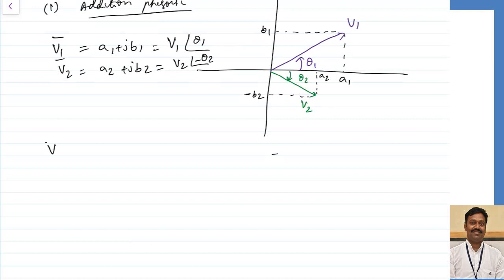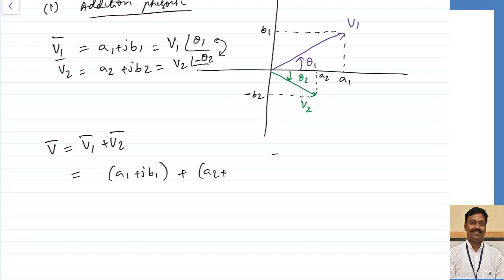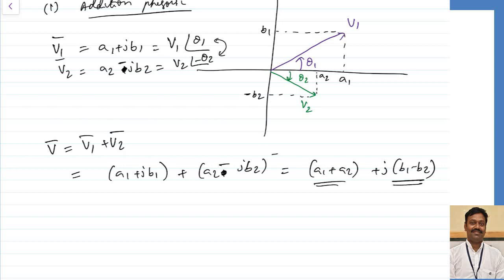The sum V1 plus V2 in rectangular coordinate system: (A1 plus jB1) plus (A2 minus jB2) equals (A1 plus A2) plus j(B1 minus B2). I have simply added the x-components and the y-components to get the resultant. Adding in polar form would require converting to trigonometric first — a lengthy process. Once the resultant is obtained in rectangular form, we can convert to polar or any other form easily.